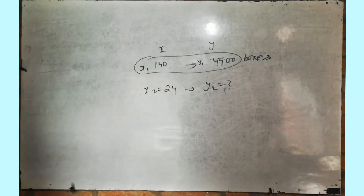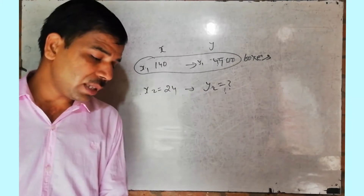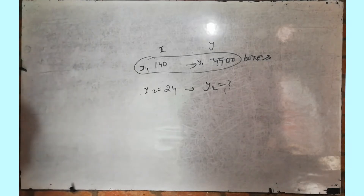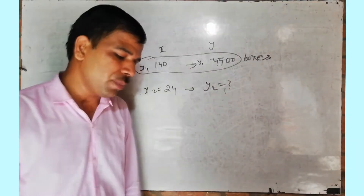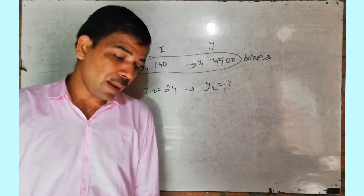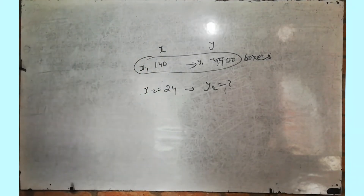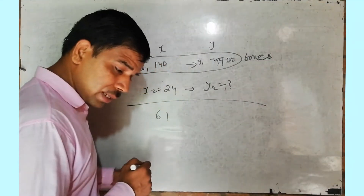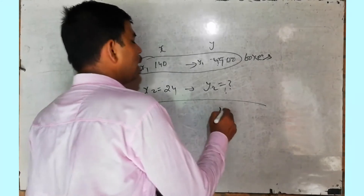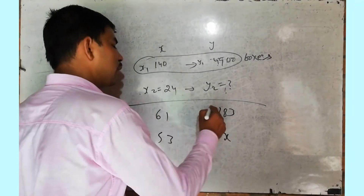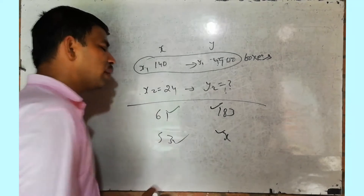Question number 3: The railway fare of 61 km is Rs. 183. Find the fare of 53 km. This is also the same type of direct proportion. For 61 km the fare is Rs. 183, so find the fare for 53 km. Put x here: this divided by this equal to this divided by this, and it will be solved easily.